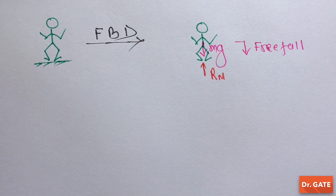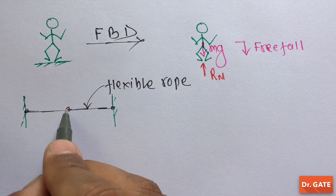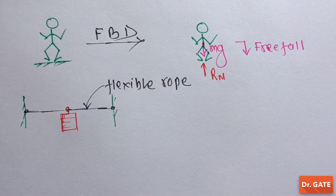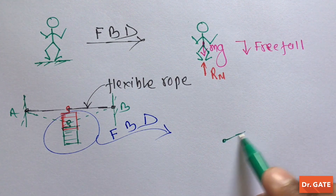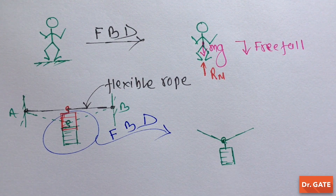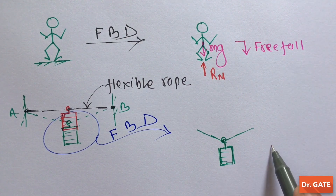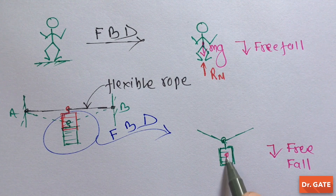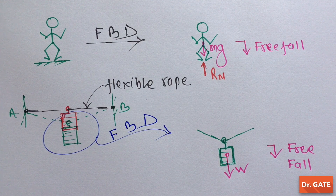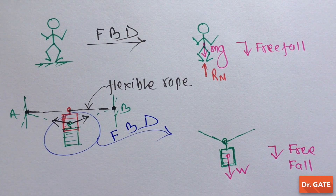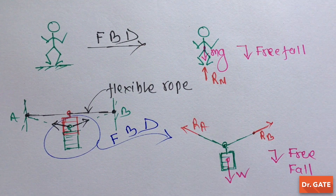Let's take another example. We have a flexible rope, and we are putting some weight on it. Then because of this weight, the final shape of this rope will be something like this. Now if we want to draw the free body diagram of this portion, then we have to draw only this portion without any support. Again, it will be in free fall because the Earth will pull this weight towards its center. But in actual case, this is not in free fall, because these supports are applying reactions. So we have to draw these reactions in the free body diagram. So this is the free body diagram of the concerned area.